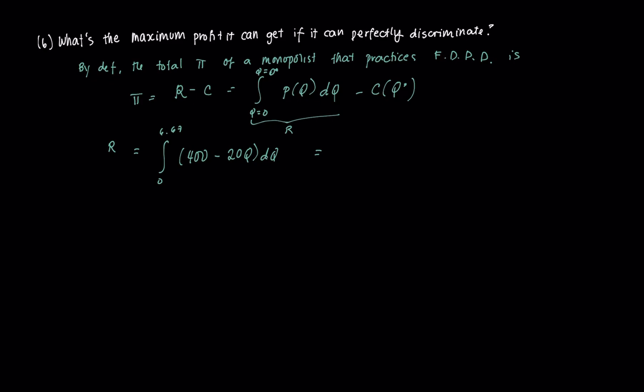This is going to be equal to 400Q minus 10Q squared. If you evaluate it using rules of integration, then you're going to evaluate this from 0 until 6.67. Then if you do that, you're going to get 400 times 6.67 minus 10 times 6.67 squared minus everything. This is going to be 0, and you're going to end up with 2,223.11.